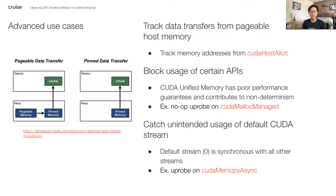Let's take a look at some slightly more advanced use cases as well. By using the CUDA host alloc API to allocate pinned memory on the host rather than pageable memory, we can avoid one extra hop when subsequently transferring this data to the GPU over the PCIe bus. By attaching a BPF U-probe onto CUDA host alloc, we can capture and store pinned memory addresses for later comparison when performing data transfers to the GPU. Thus, we are able to identify which, if any, data transfers were made suboptimally.